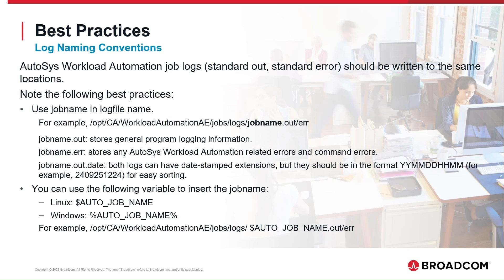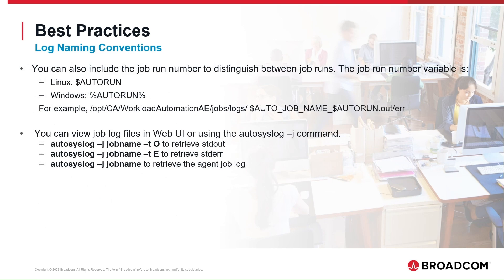Instead of manually typing the job name, you can use the auto_job_name variable to insert the job name automatically. With the autorun variable, you can also include the job run number in the file name to differentiate between multiple job runs. You can view job log files in Web UI, or using the autosyslog command with the -j option. Use autosyslog -j job_name -to to retrieve the standard out, -te to retrieve the standard error, and autosyslog -j job_name to retrieve the agent job log.